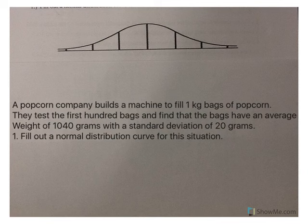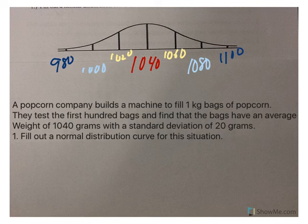Now we have a popcorn company that builds a machine to fill 1 kilogram bags of popcorn. They test the first 100 bags and find that the bags have an average weight of 1,040 grams with a standard deviation of 20 grams. Fill out this normal distribution curve. The numbers should look like that. You have your mean in the middle. To go to the right, we're going to add 20. To go to the left, we subtract 20 in order to find the empirical rule.